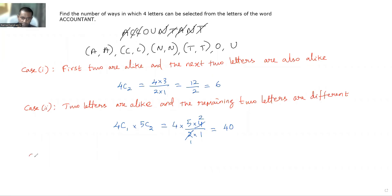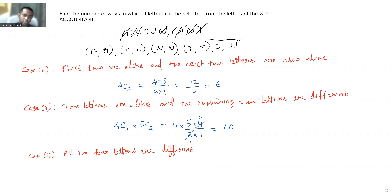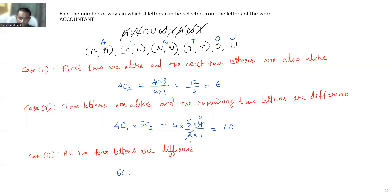Now considering Case 3: all four letters are different. Taking one letter from each repeated group — one A, one C, one N, one T — plus O and U, we get six distinct letters: A, C, N, T, O, U. From these six different letters, I select four.